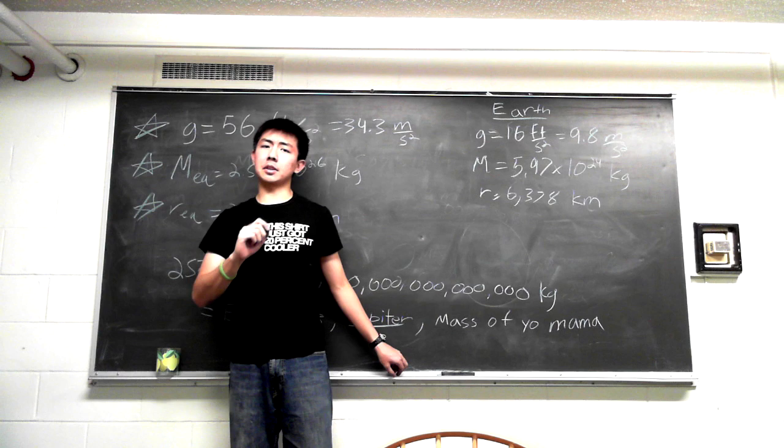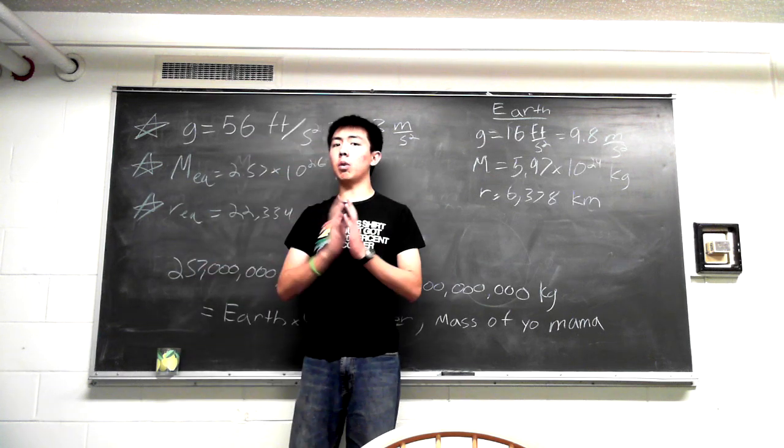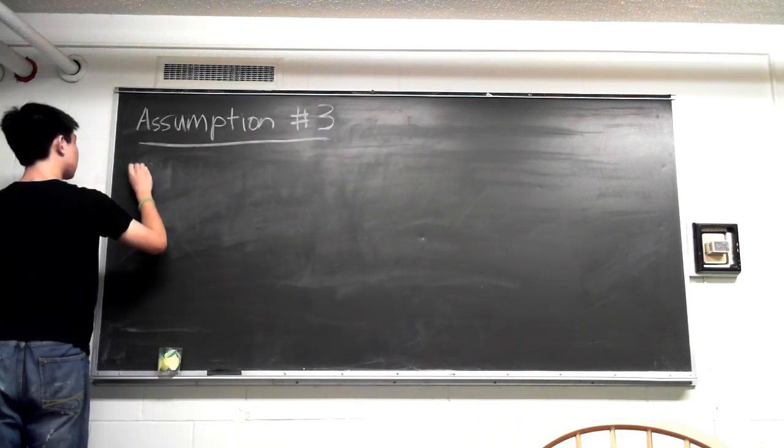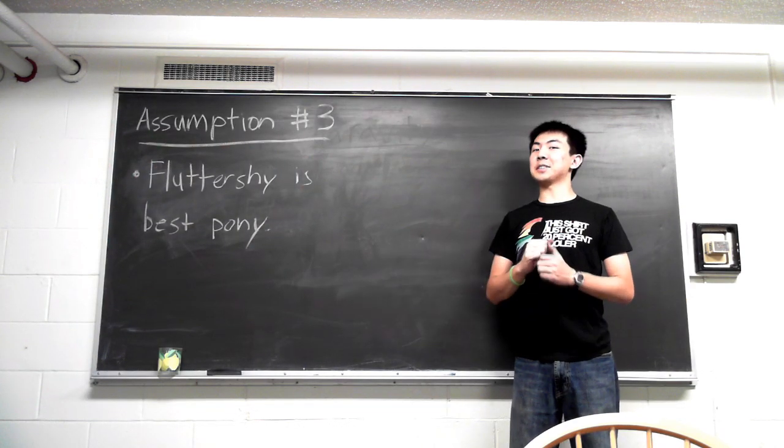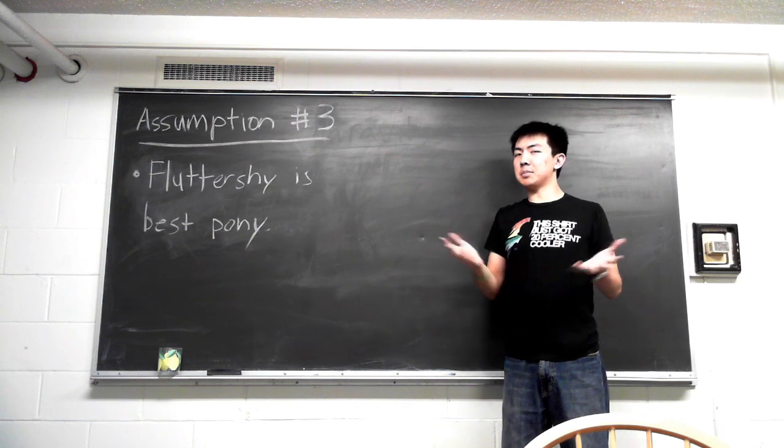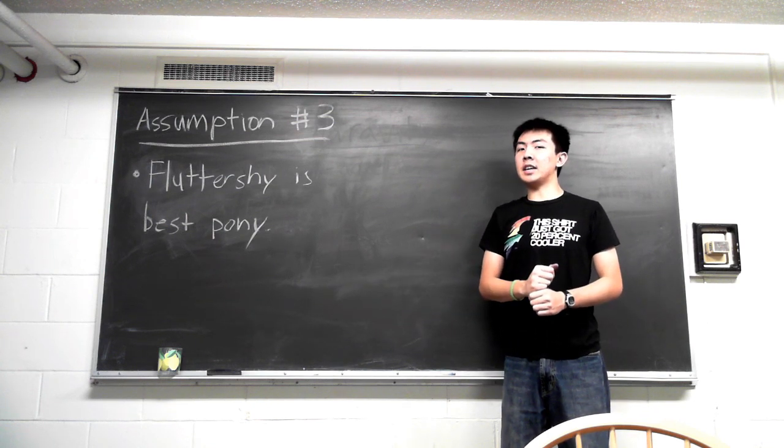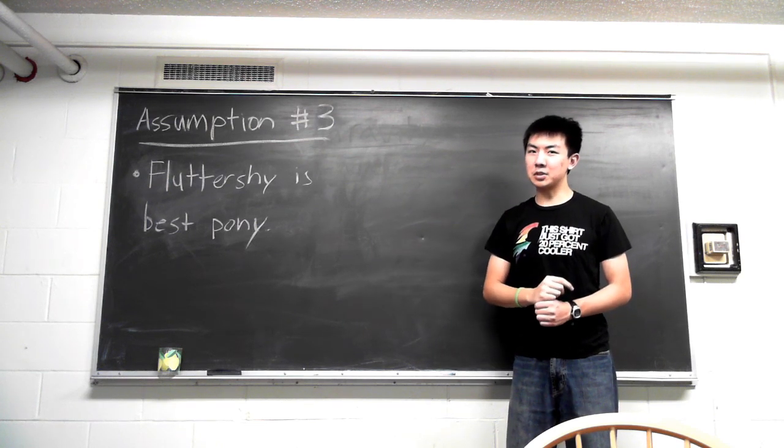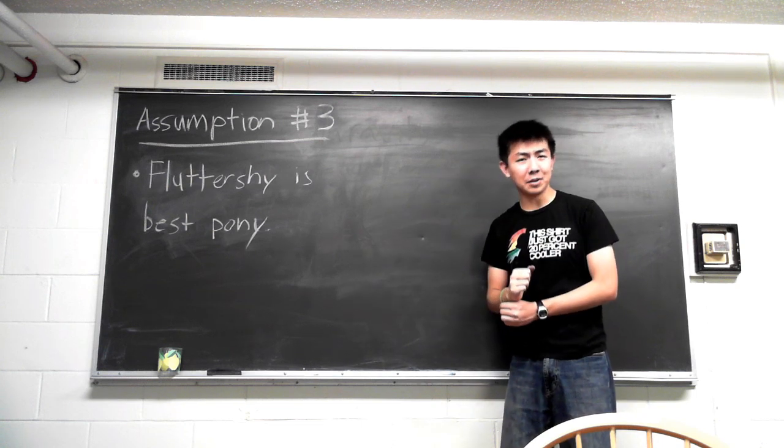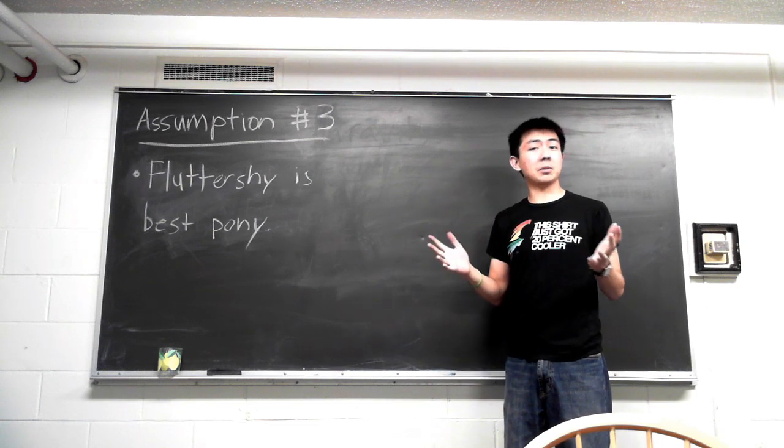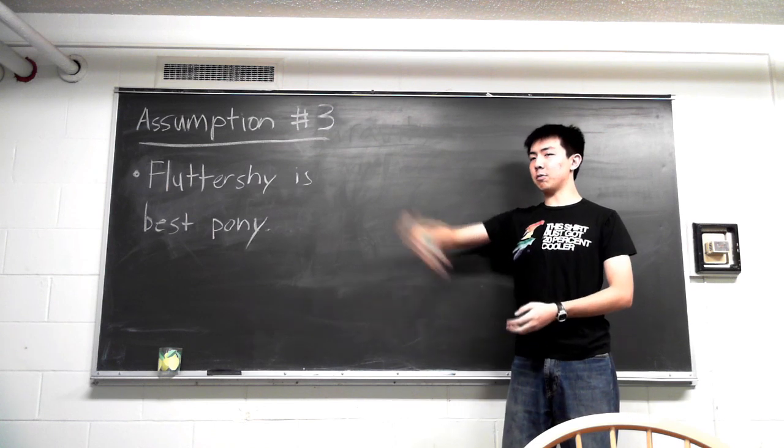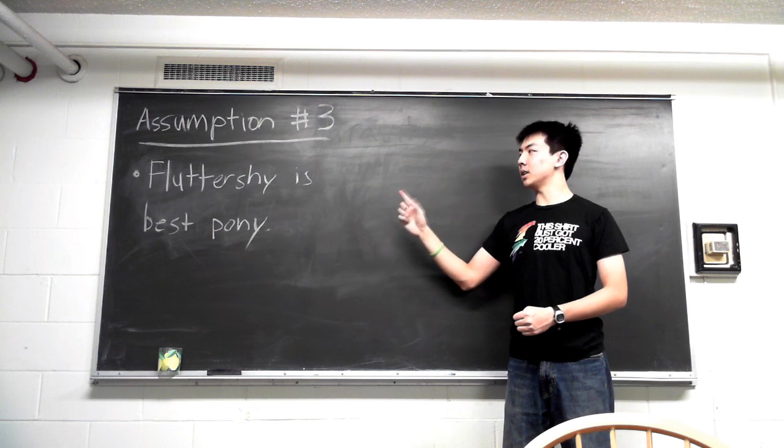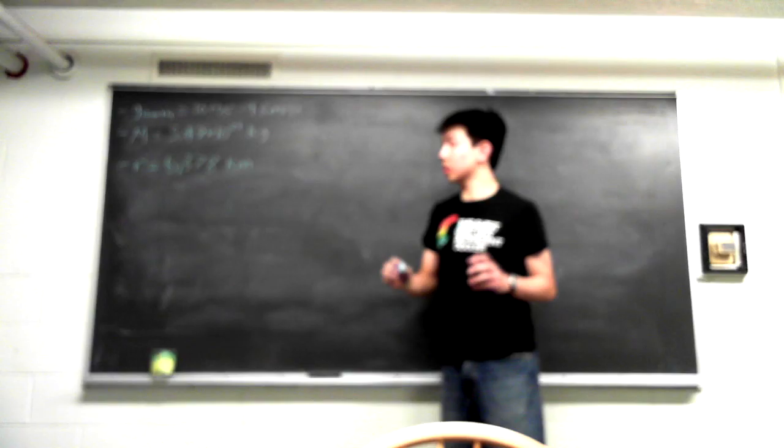However, before we conclude our calculations, we have to make one final assumption. Assumption number three: Fluttershy is best pony. Now, this assumption might seem unrelated to what we've done today, but this core assumption is vital to all of the equestrian science. In fact, if we did not assume that Fluttershy was best pony, we wouldn't be able to calculate anything at all. All of our theories would just go flying out the window because nothing can be calculated unless we assume that Fluttershy is best pony.